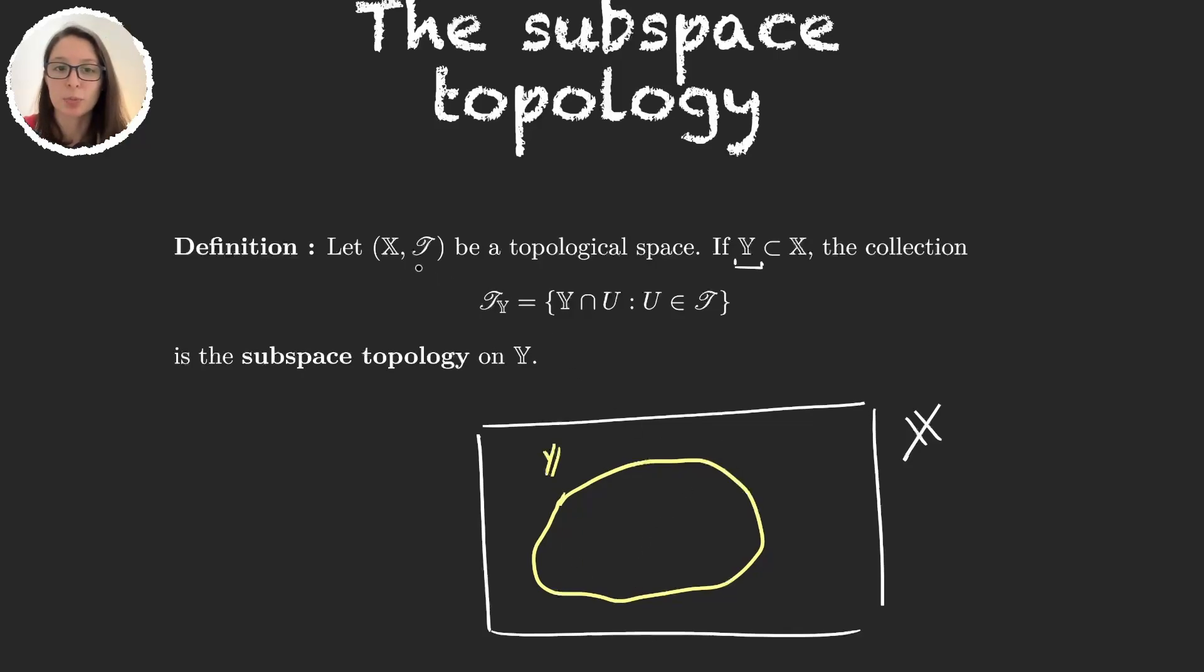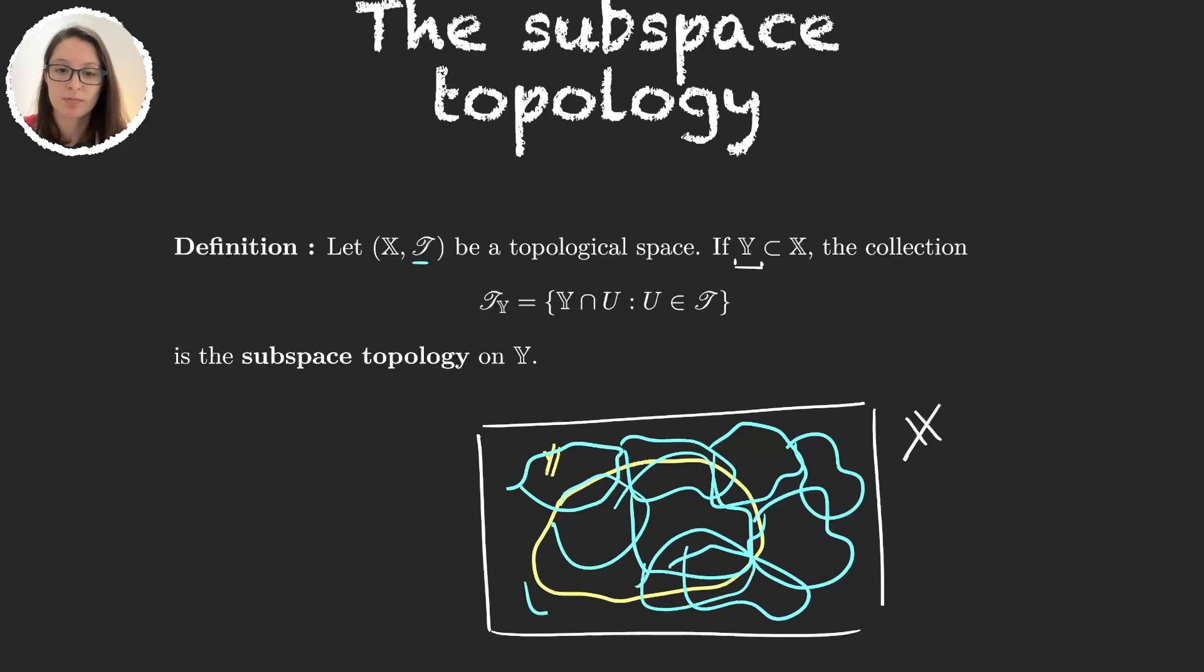Now we already have a topology 𝒯 defined on X, so we know that there are some sets in the space that we call open sets. And the idea is to define this new topology with the intersections of these blue sets with our set Y.